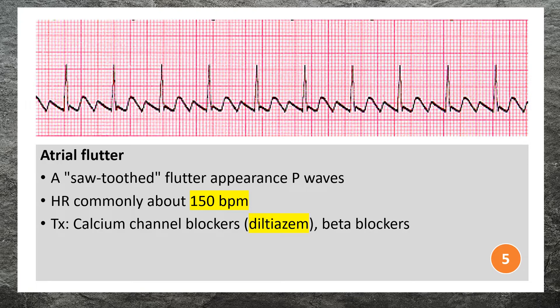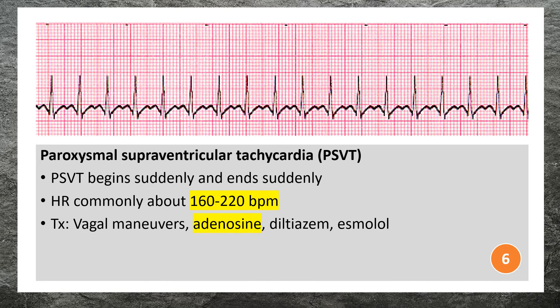Atrial flutter is characterized by a saw-toothed flutter appearance on the ECG, representing multiple P waves for each QRS complex. Adenosine or calcium channel blockers are commonly used to treat atrial flutter. Paroxysmal supraventricular tachycardia (PSVT) is characterized by episodes of rapid regular heart rate that begin and end suddenly.